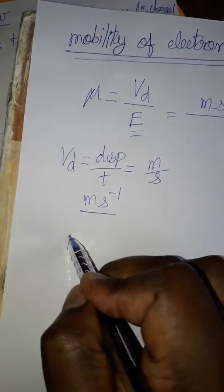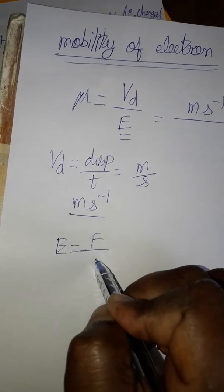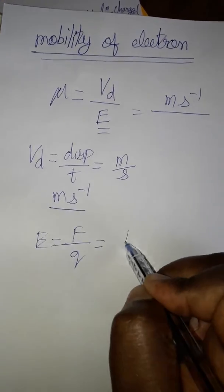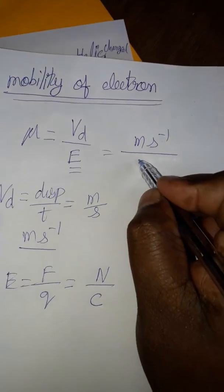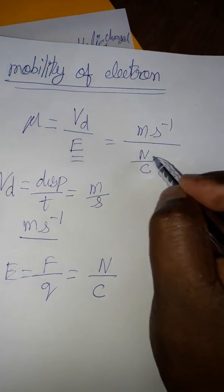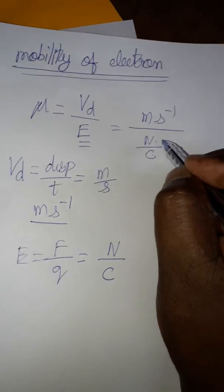Electric field is equal to force per unit charge. Force SI unit is Newton, charge SI unit is coulombs. So that means Newton by coulombs. When denominator goes into numerator...